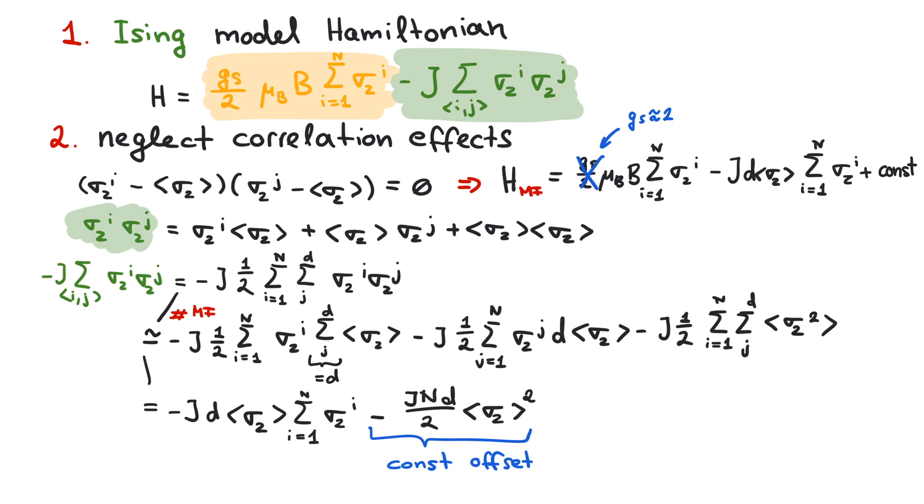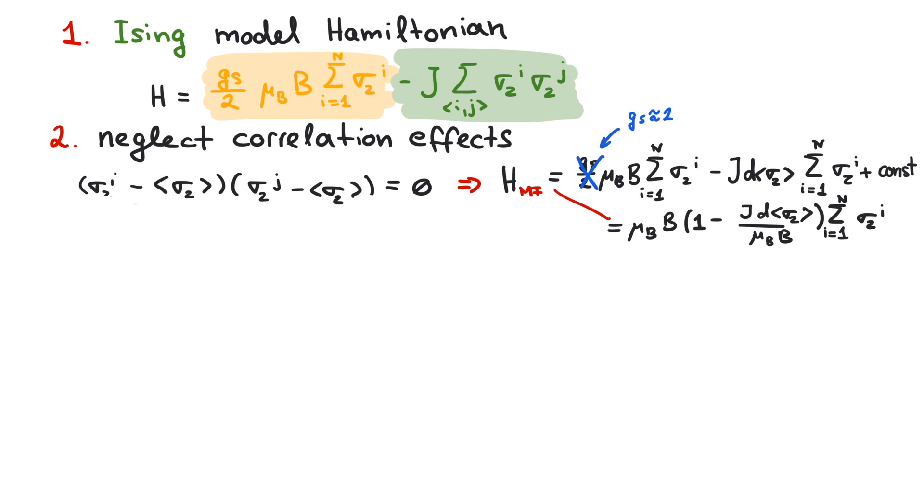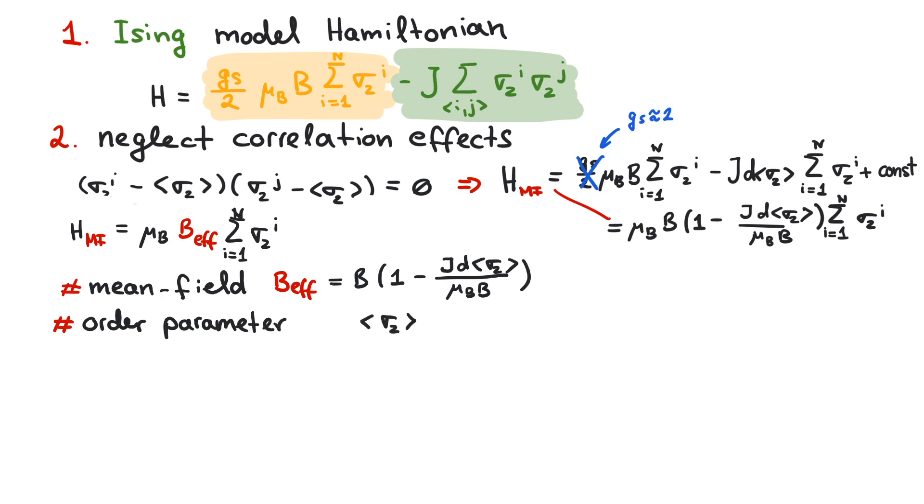At the beginning, we promised to introduce a mean field and an order parameter along the way. So, let's have a closer look. The mean field Hamiltonian actually looks exactly like the non-interacting system, except that we obtain an effective B-field. This is the mean field. The measure of how ordered the spins are is the thermal average of the Pauli matrix.